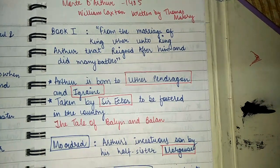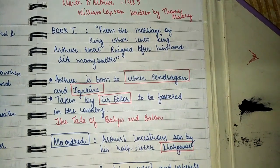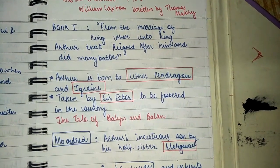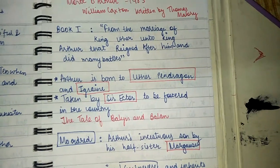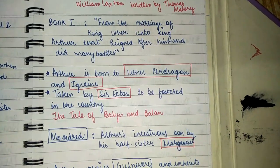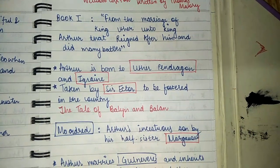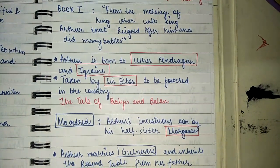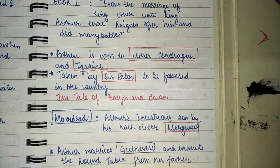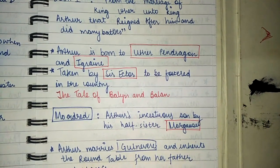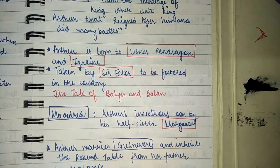In Book 1, from the marriage of King Arthur into King Arthur that reigned after him and did many battles. Arthur is born to Uther Pendragon and Igraine, his mother, and taken by Sir Hector to be fostered in the country. Sir Hector was the foster father of Arthur.